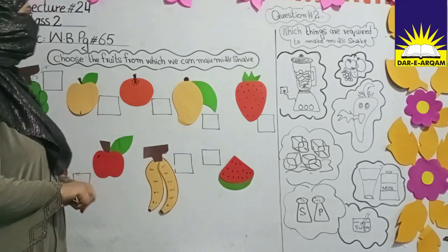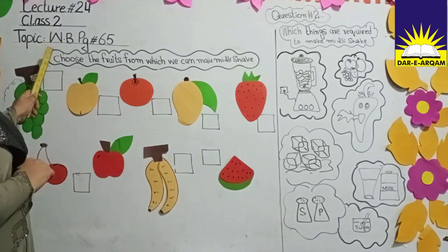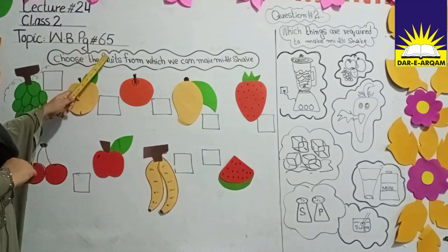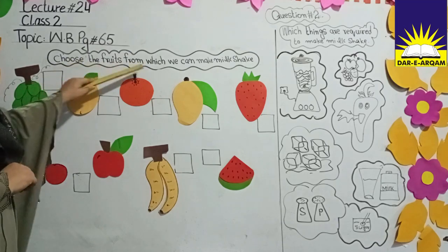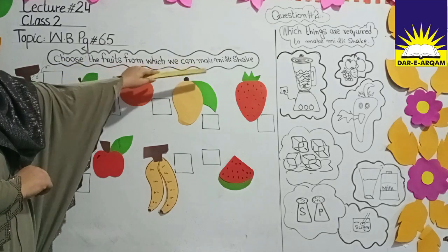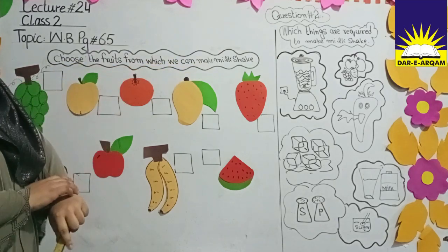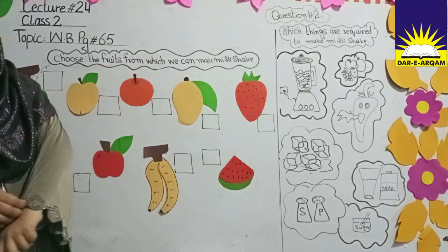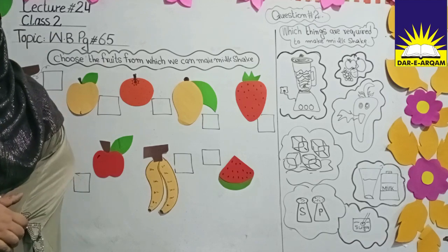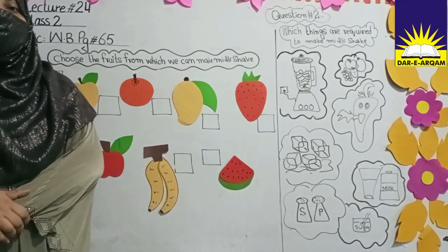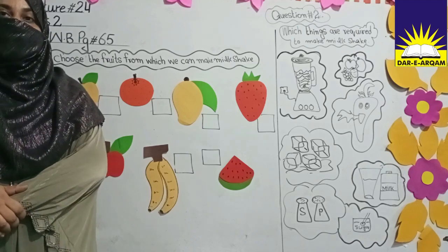Today's lecture is our workbook page 65. You have to choose the fruits from which we can make milkshakes. Milkshake is the most important thing you have drunk. It is very nutritious and very tasty.